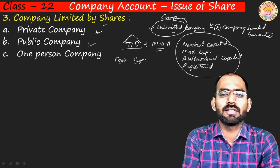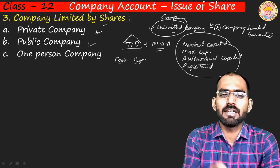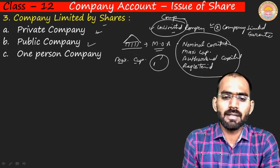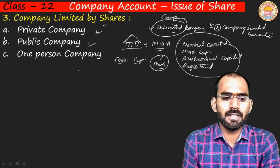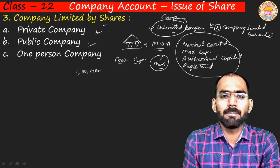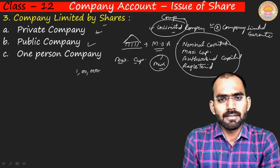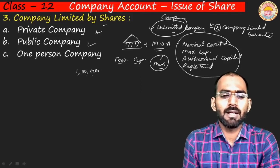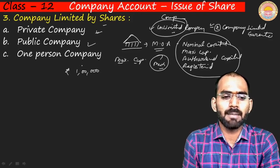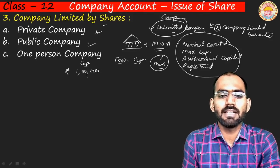In the memorandum of association it is written that the company's maximum capital is, for example, ₹1,000,000,000. Suppose you say the maximum capital is ₹1,000,000,000 — then the company is limited to that amount. If you want to raise that capital, let us understand how.